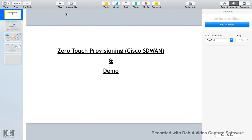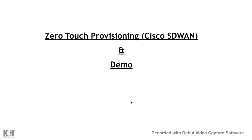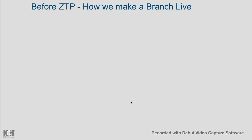Zero-touch provisioning is one of the key use cases for software-defined wide area network. I have taken Cisco SD-WAN because Cisco is a leading market vendor and their technology is prominent. Before ZTP, let's look at how much effort you normally had to put in to bring any branch live.